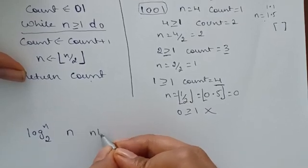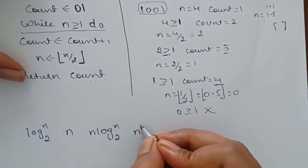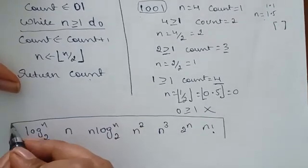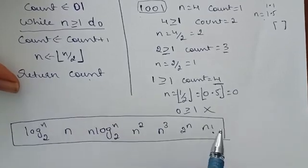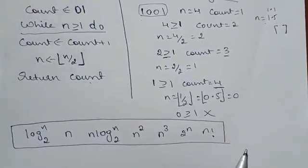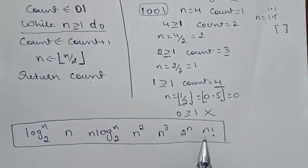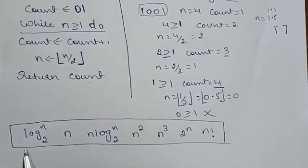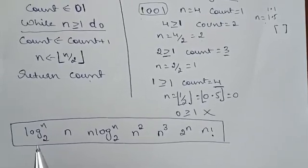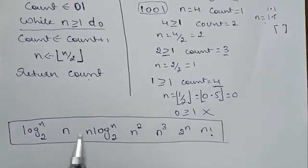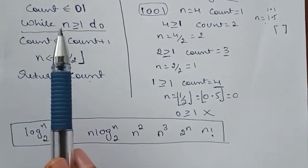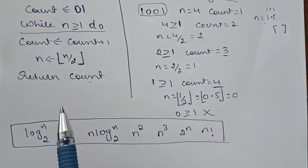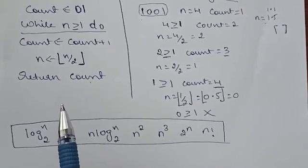The order of growth table lists, from slowest to fastest: log₂n, n, n·log₂n, n², n³, 2ⁿ, n!. The factorial function grows fastest; log₂n is the slowest. For an algorithm with a while loop like this, we directly apply the lowest relevant order of growth. Since this algorithm halves n each iteration, it corresponds to log₂n.